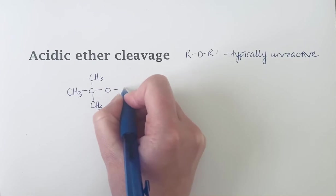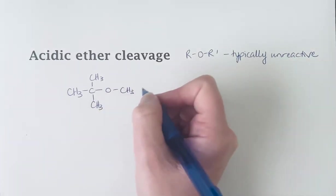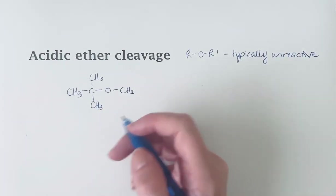We've got a tert-butyl group on one side, a methyl group on the other. So this is methyl tert-butyl ether, or MTBE.